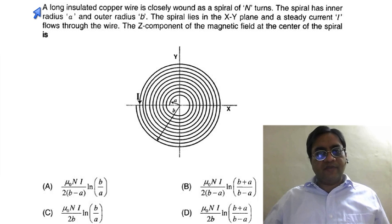This problem came in JEE 2011. A long insulated copper wire is closely wound as a spiral of N turns. The spiral has inner radius 'a' and outer radius 'b'. The spiral lies in the x-y plane and a steady current 'I' flows through the wire.